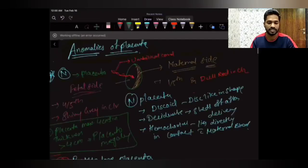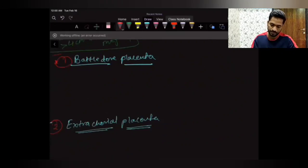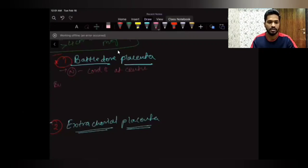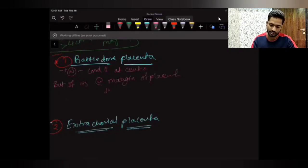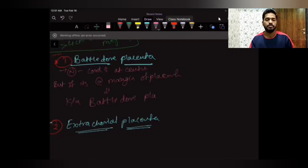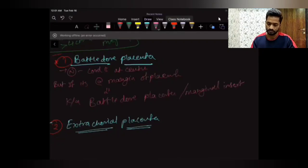Now let's talk about battledore placenta. Normally the umbilical cord originates from the center of the placenta. But if the cord is not at the center but at the margins of the placenta, this is known as battledore placenta, also called marginal insertion of the cord in the placenta.